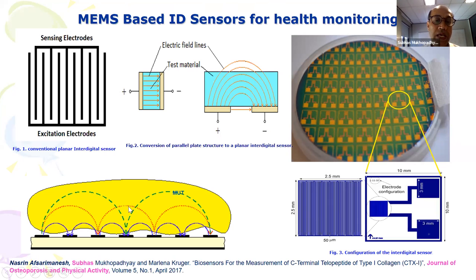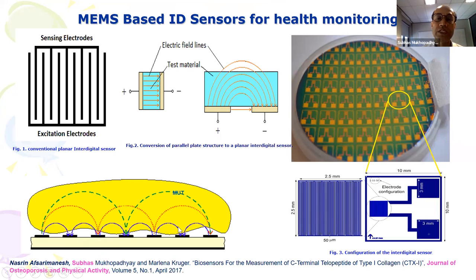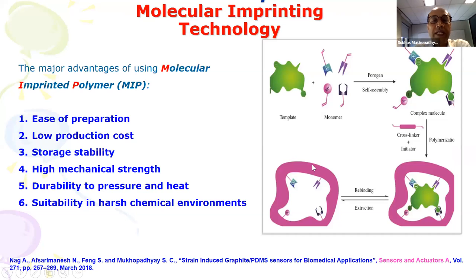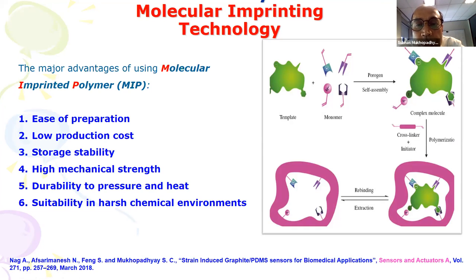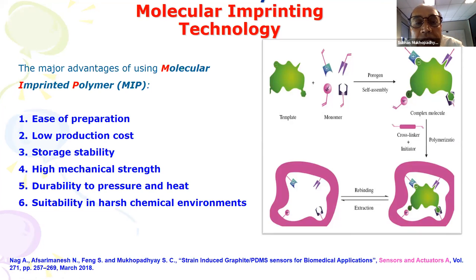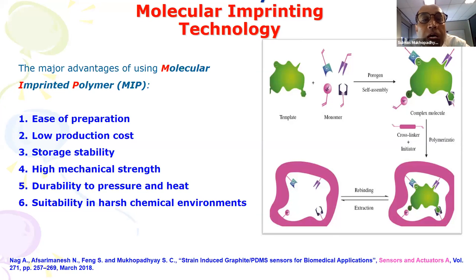Here we show that by changing the spacing between the two electrodes, you can make the resolution better. For chemical and biological applications, if you want to determine a particular thing — for example, fat content in meat, protein in blood, or nitrate in water — you need to make the sensor selective. When PhD students work on sensor-related research, they try to develop a coating called molecular imprinted polymer. They develop a polymer which can detect at the molecular level — for example, a cancerous cell.